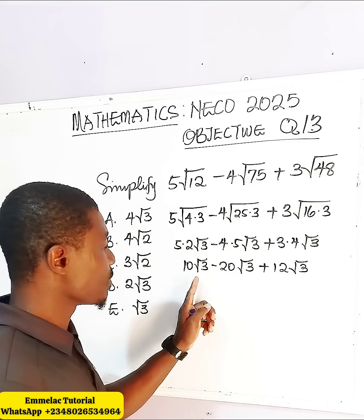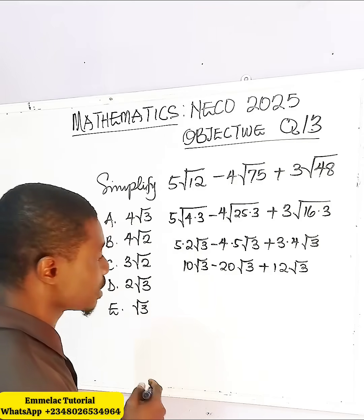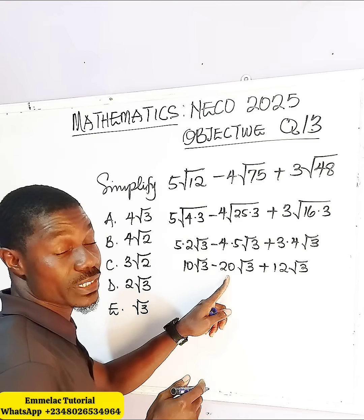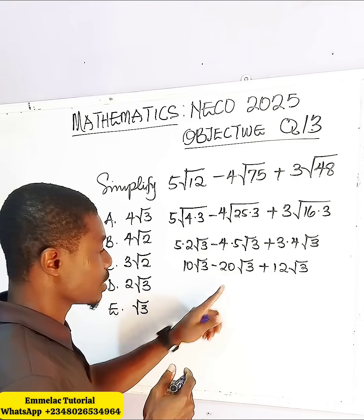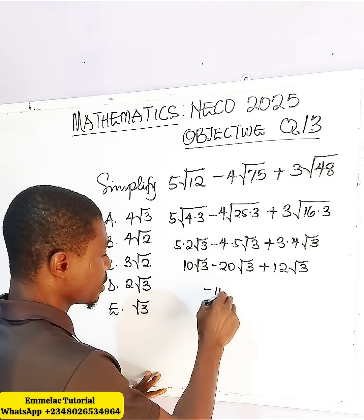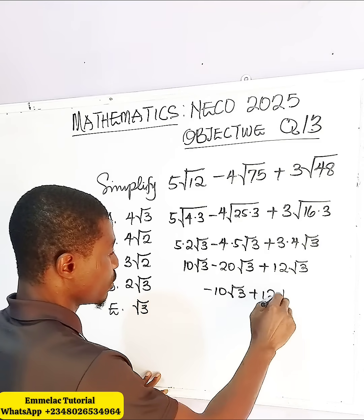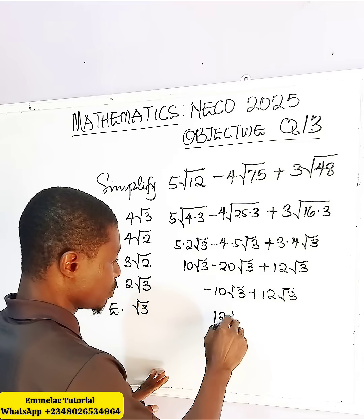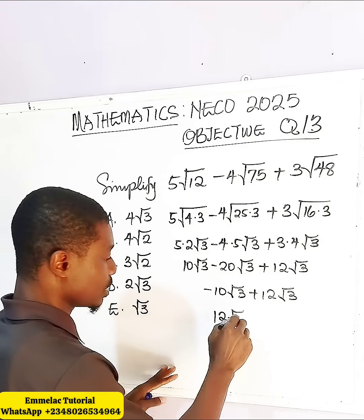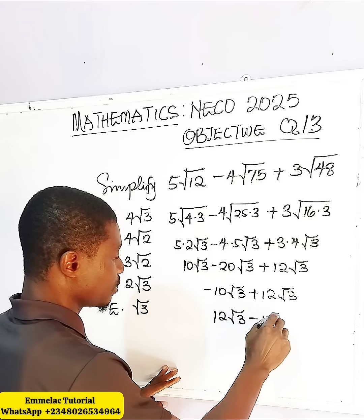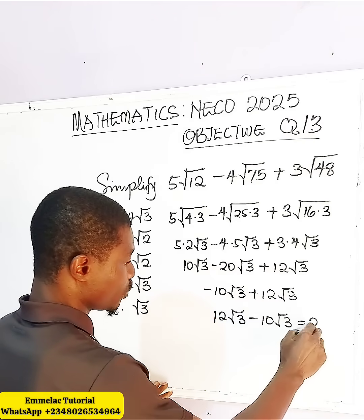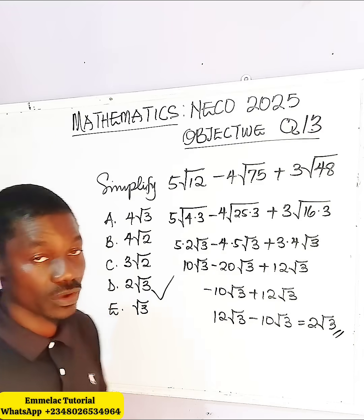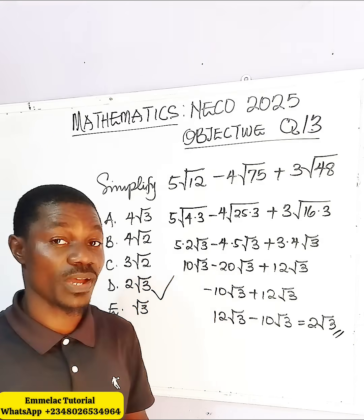Since they all have the same term √3, we just add them: 10 minus 20 plus 12 gives us 2. So the final answer is 2√3, meaning D is the correct answer. Thank you and God bless you.